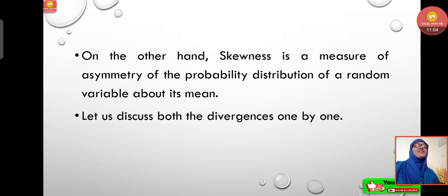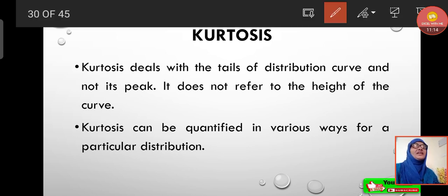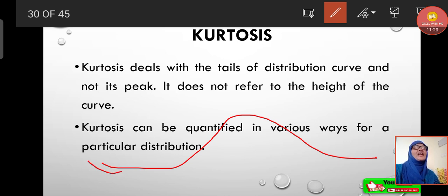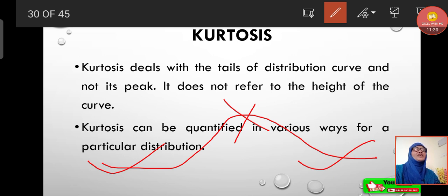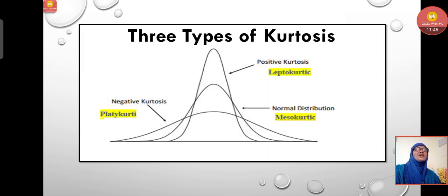Kurtosis deals with the tails of the distribution curve, not its peak. It does not refer to the height of the curve. Kurtosis can be quantified in various ways. For a normal distribution, the kurtosis of any variable is 3, and this value is used for comparison with respect to other types of kurtosis. Kurtosis is classified into three types: positive kurtosis (leptokurtic), negative kurtosis (platykurtic), and normal distribution kurtosis (mesokurtic).